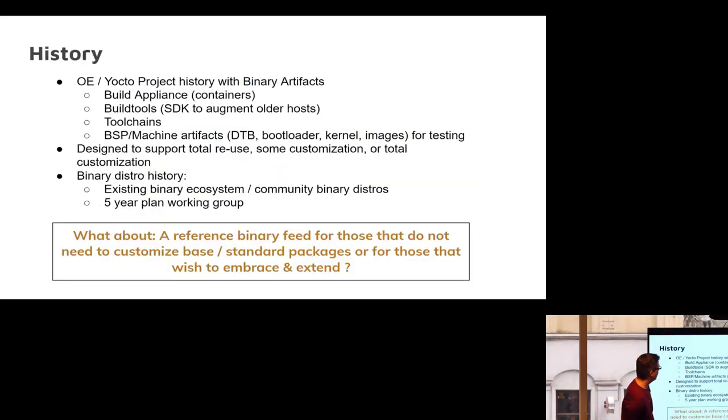This is a slide I did for that ELC. The open embedded and Yocto project binary artifacts have existed since day zero. There are a lot of different things that have come and gone. Packages have been generated and installed into the image whether you know it or not. We've had build appliance, build tools, SDK things to augment older hosts, tool chains, BSP machine artifacts. All these things can be called binary artifacts of a build and they've been around for ages. What's not been there is the design and flow to support either reusing them, customizing them, or not doing all the work yourself again every time.